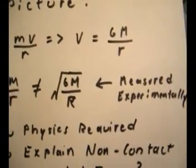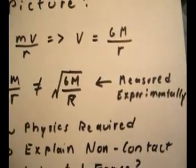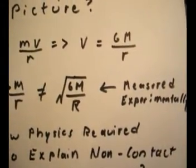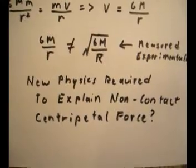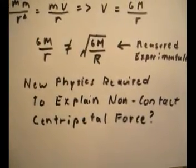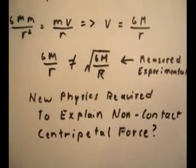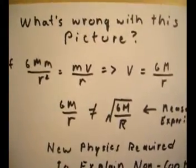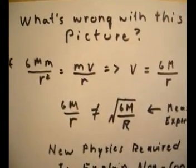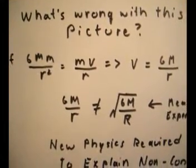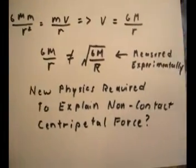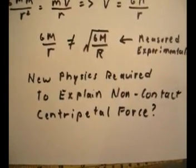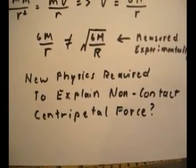However, that does not equal what has been experimentally measured, which is that the orbital velocity is always equal to the square root of Gm divided by r. And it's very difficult to try and reconcile the force of gravity formula with this new non-contact centripetal force formula, mv over r. So it may mean that some new physics are required to explain this non-contact centripetal force.